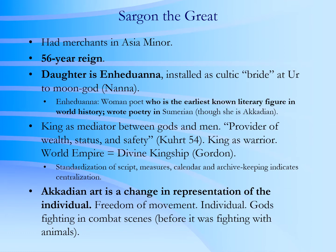Sargon reigned a long time, 56 years, and like other rulers of Mesopotamia would set up his family members in various cities throughout Mesopotamia. His daughter, Enheduanna, was installed as the cultic bride at Ur. Ur is a city where the focus especially is on the moon god. Ur is also famous as being the place where Abraham came from. And Enheduanna, in fact, is the earliest known literary figure — the person whose name we know, earliest in time, who composed literature of some sort. She composed poetry.